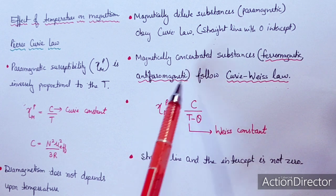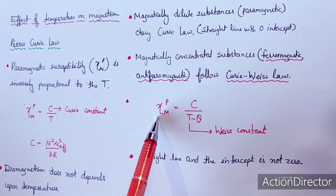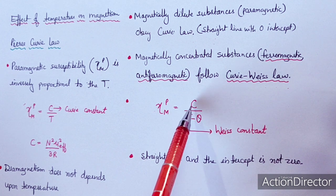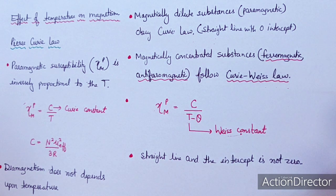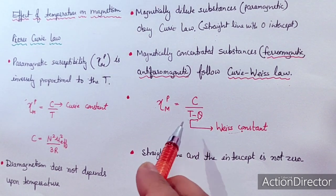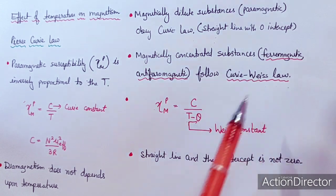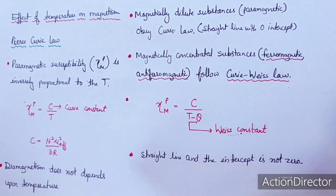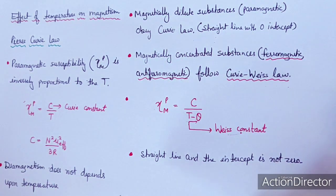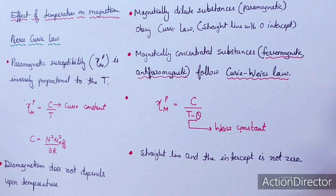In the Curie-Weiss law: χm = C / (T − θ), where C is the Curie constant, T is the absolute temperature, and θ is the Weiss constant. For magnetically concentrated substances the intercept is not zero — the straight line originates higher or lower than zero. This can be understood with the help of plots between molar susceptibility and temperature for diamagnetic, paramagnetic, and magnetically concentrated substances.